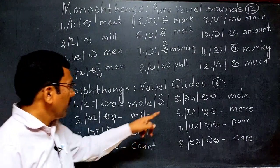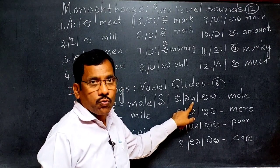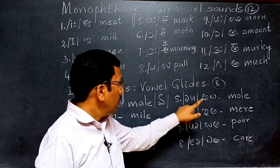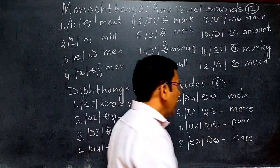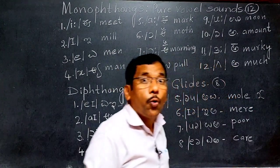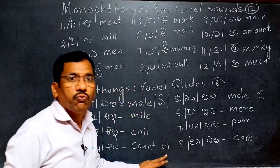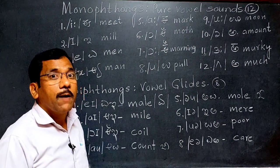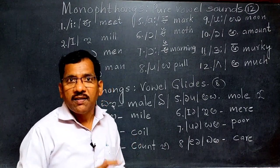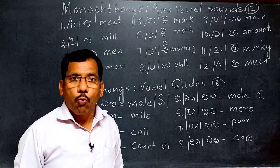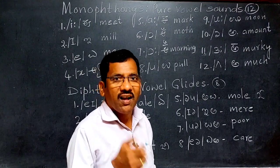One diphthong equals one syllable. The fifth diphthong is 'AU.' For example, 'mouth.' In India we pronounce it as 'O,' but in English we have to pronounce it as 'AU.' Wherever we pronounce 'O' in Indian English, in standard English we have to pronounce it as 'AU.' The sixth diphthong is 'IA.' For example, 'mia.'